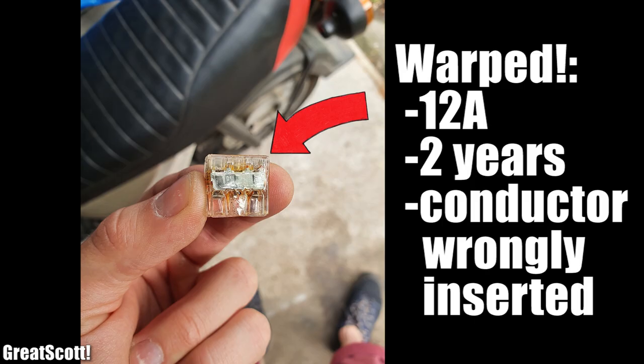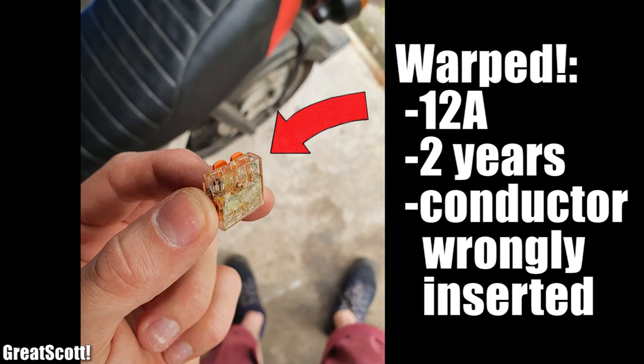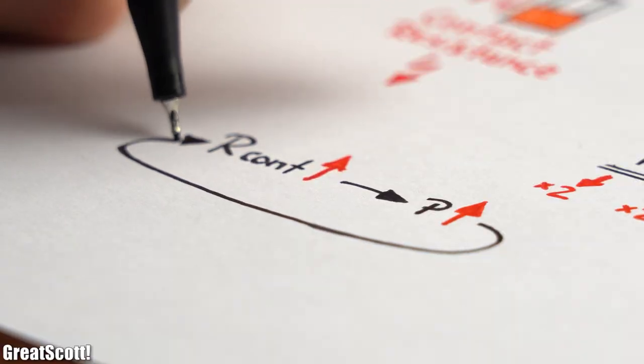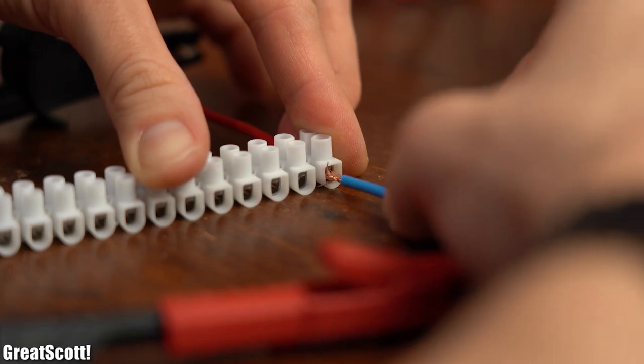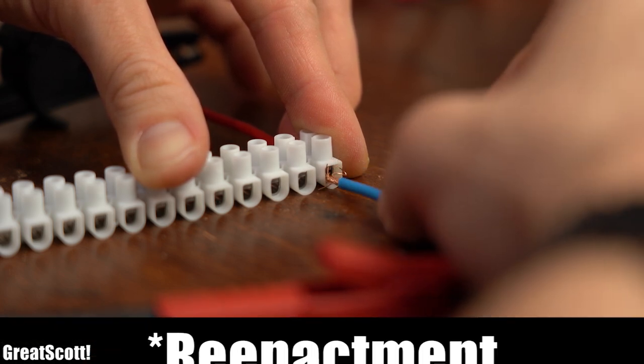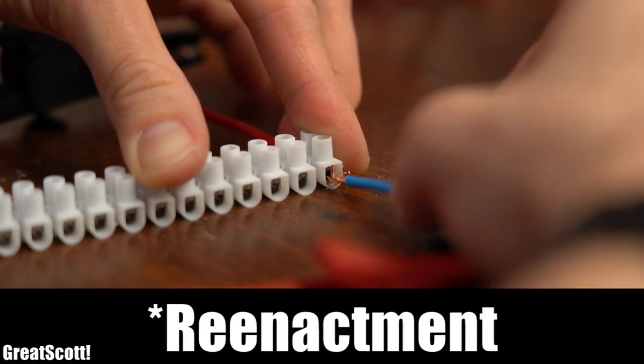With more heat, the electrical connector can potentially warp and thus increase the contact resistance even more. This can become a vicious cycle in which not only heat gets generated, but also if the stranded wire becomes completely loose, can lead to the creation of tons of sparks and in the worst case to a fire.